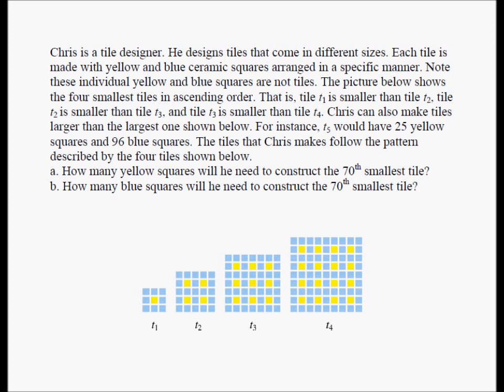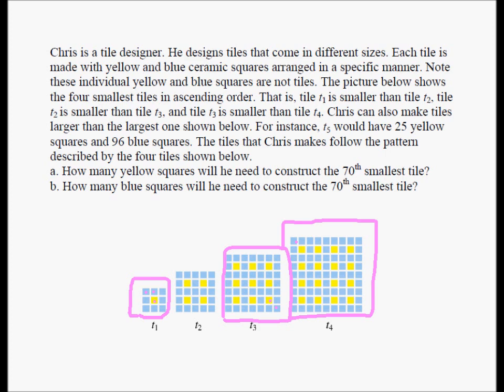Note that this is a tile, and these are called blue squares, and this is a yellow square. So this is a tile — we are not going to call the little squares a tile. This is one tile, and this is a yellow square. This is a blue square. Here is another big tile — the fourth smallest one. Here is a blue square, and here is a yellow square.